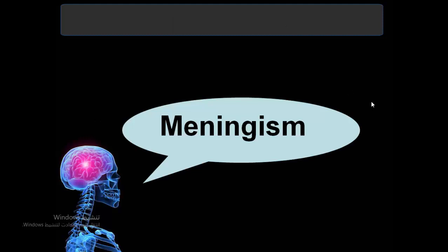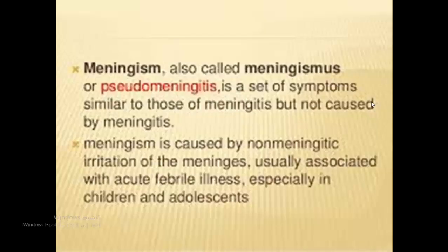The second differential diagnosis is meningism, also called meningismus or pseudomeningitis. From the name, we understand: it presents like meningitis but meningitis is absent. It is a set of symptoms similar to those of meningitis — headache and meningeal signs — but the meninges are healthy and uninflamed. Meningism is caused by non-meningitic irritation, usually associated with acute febrile illness, especially in children and adolescents.